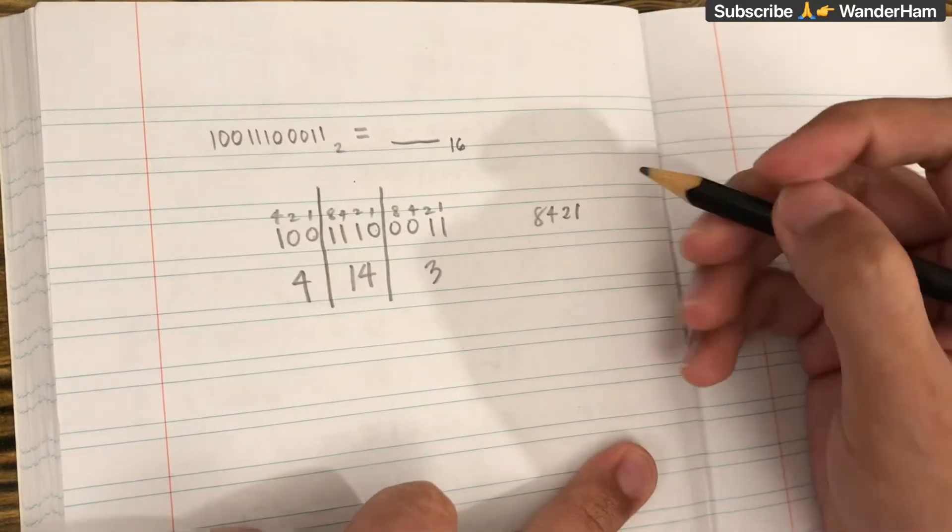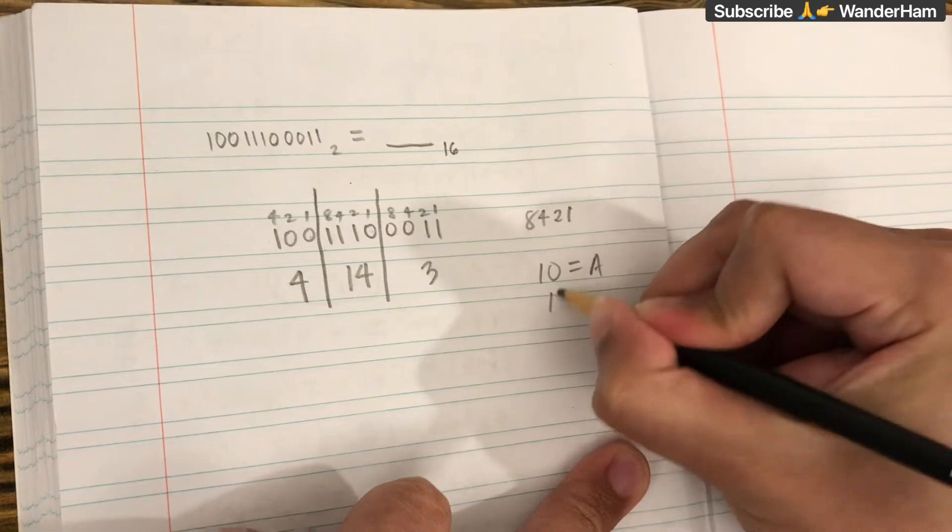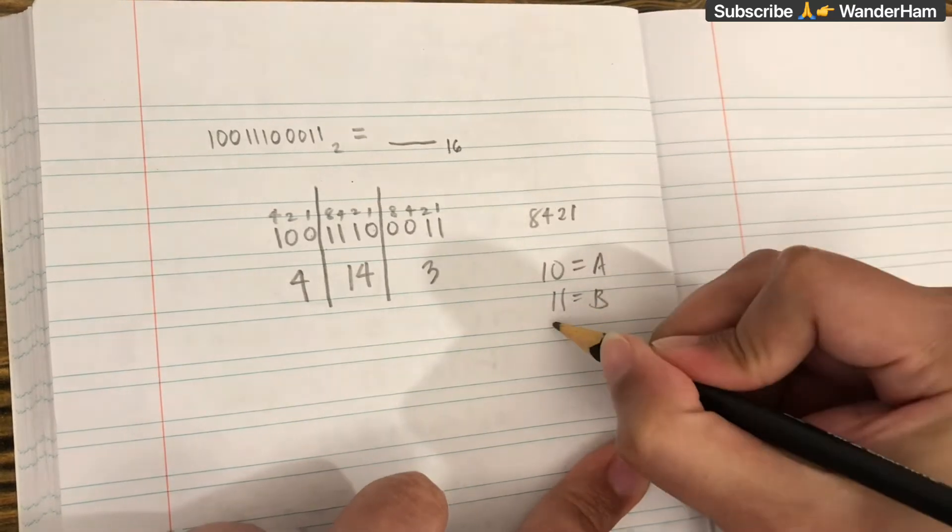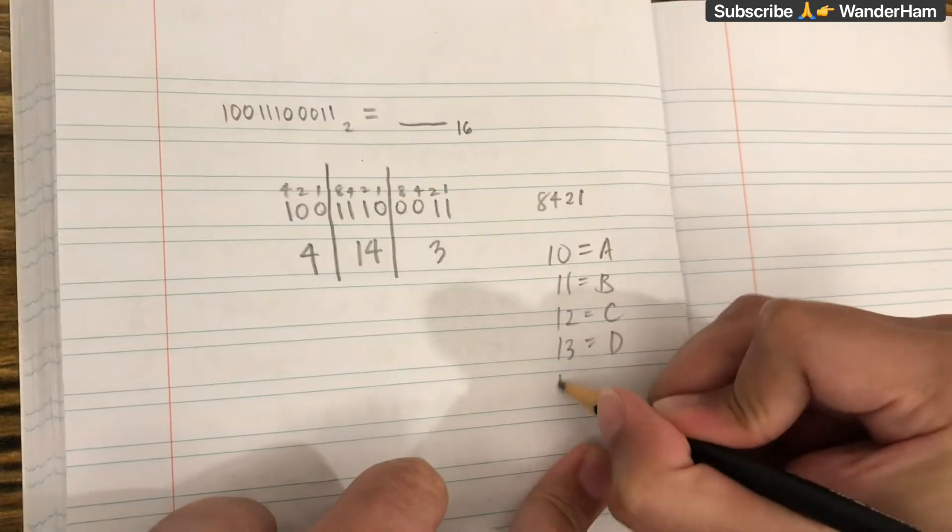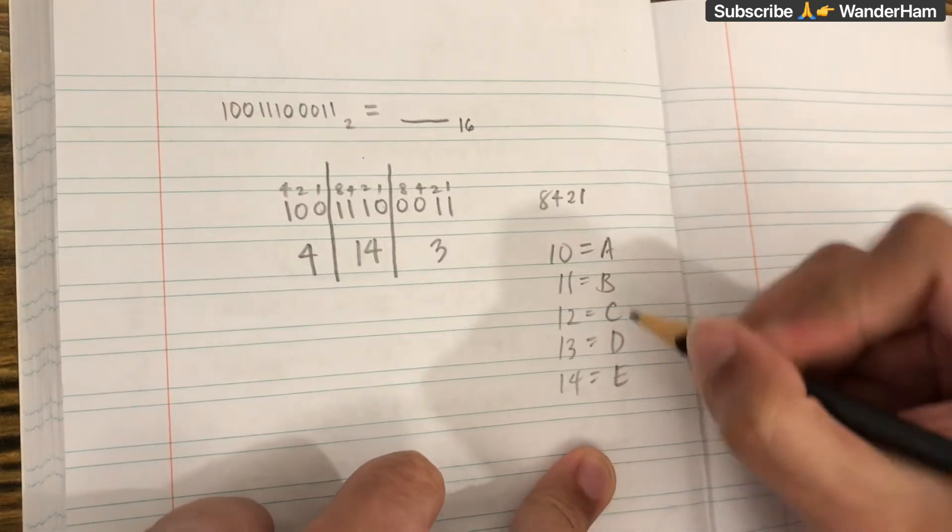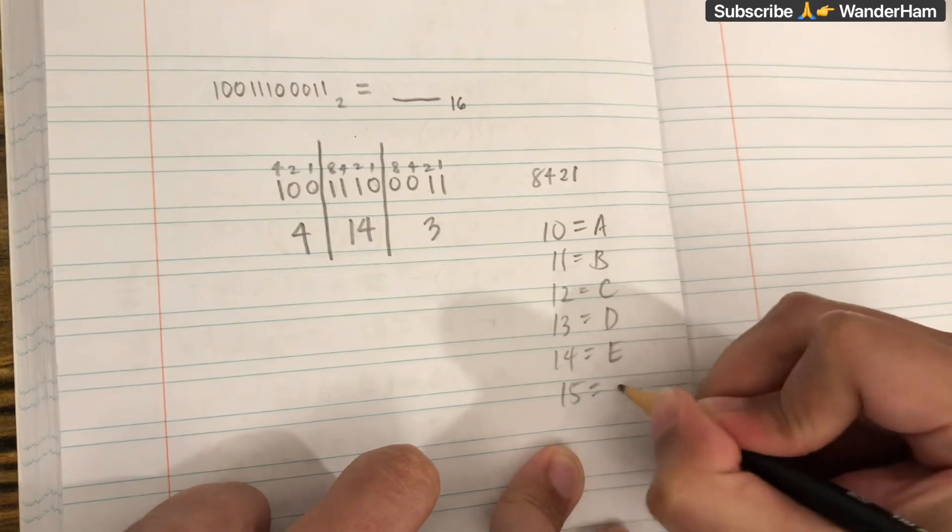Now in hexadecimal, 10 is equal to A, 11 is equal to B, 12 is equal to C, 13 is equal to D, 14 is equal to E, and 15 is equal to F.